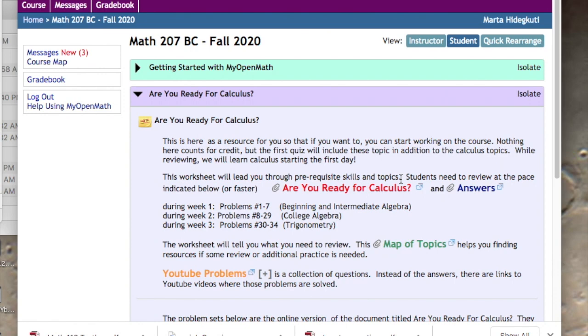And then the rest, which should be the third week's review material, number 30 to 33, would be Trigonometry. This worksheet, Are You Ready for Calculus, is basically leading you through prerequisite courses. So I would start working these problems. The answers are also posted, so you can check your work.